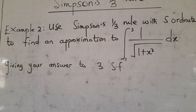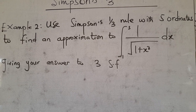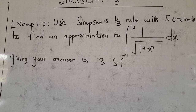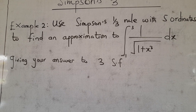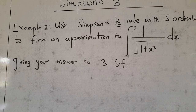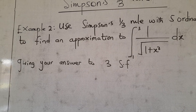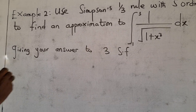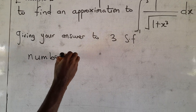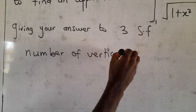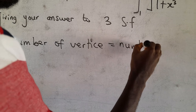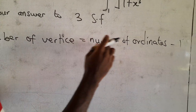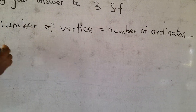Our second example says: use Simpson's 1/3 rule with 5 ordinates to find an approximation to the integral from 1 to 3 of 1/√(1+x³) dx, giving your answer to 3 significant figures. Remember Simpson's 1/3 rule can only be used if the number of subintervals is even, and the number of subintervals equals the number of ordinates minus 1. So when we subtract 1 from the number of ordinates and it is even, we can use Simpson's 1/3 rule.